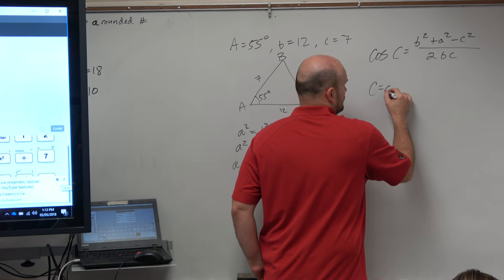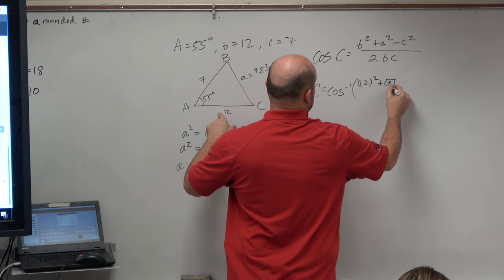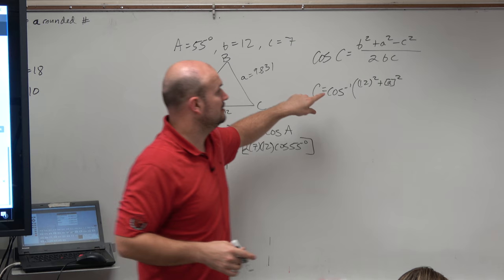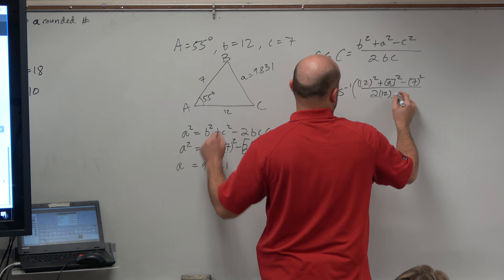OK, so then for C equals cosine inverse, right? Because you just take the cosine inverse of b squared, let's see, which is 12 squared plus a squared. Now, a is stored, correct? We stored a. We found a and we stored it. And then minus c squared, which is 7 squared. And then all over 2 times b, which is 12, times a again, which is our stored answer.